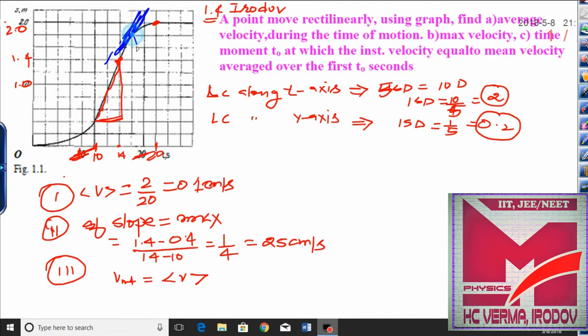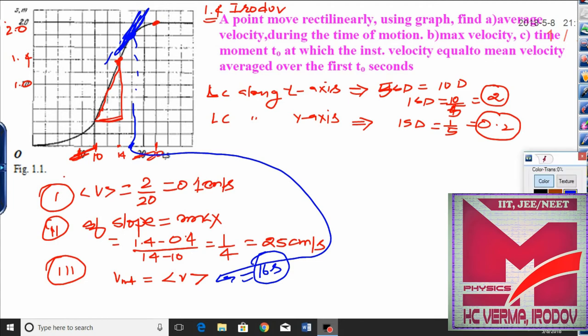This point is 16 seconds. At 16 seconds you will get the instantaneous velocity becoming equivalent to average velocity.